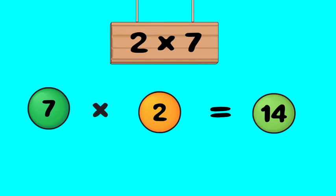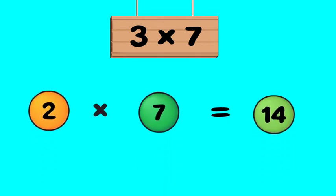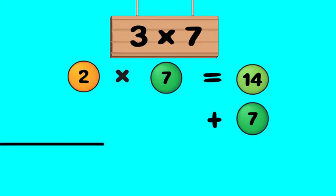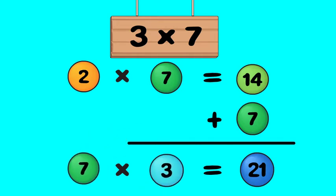How about three times seven? Pretty easy to figure out. Start with two times seven is fourteen, add one more group of seven, so three times seven is twenty-one. And seven times three is also twenty-one.